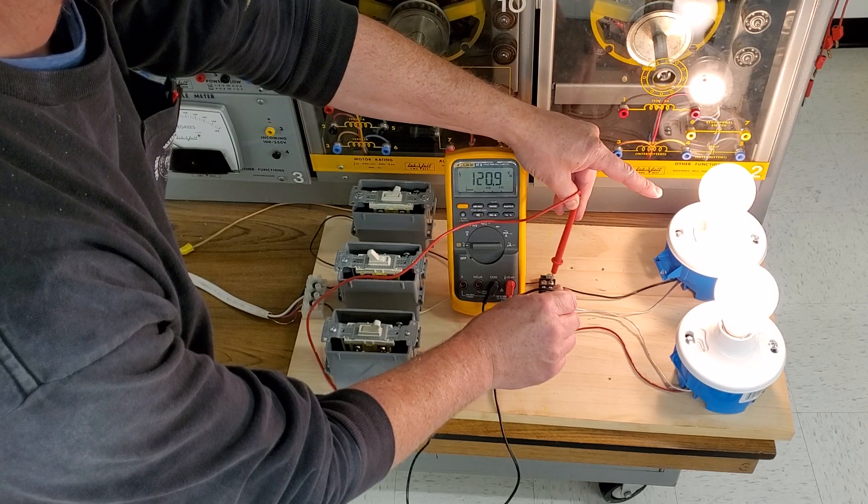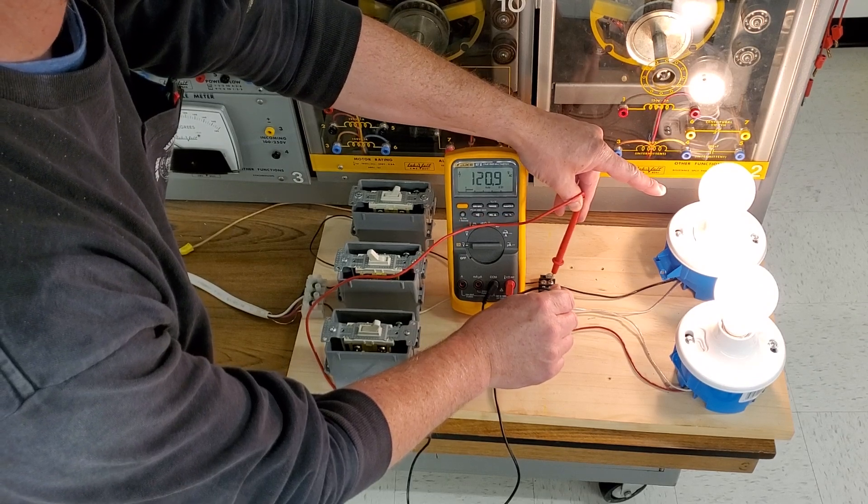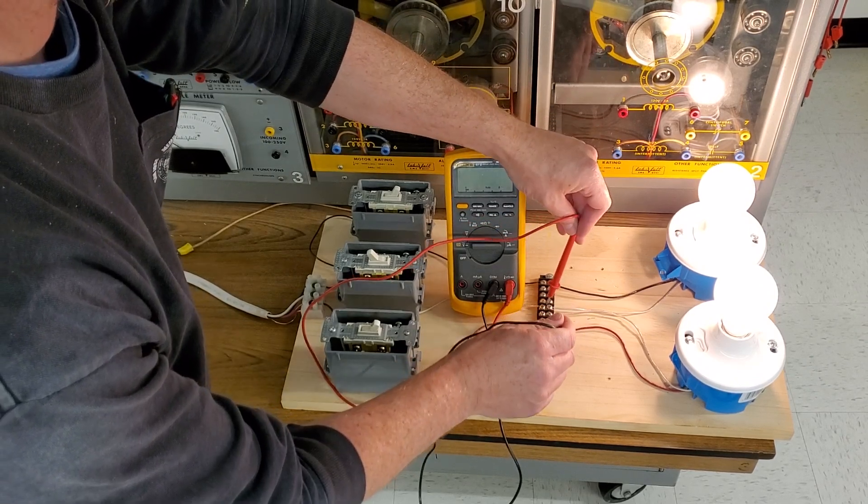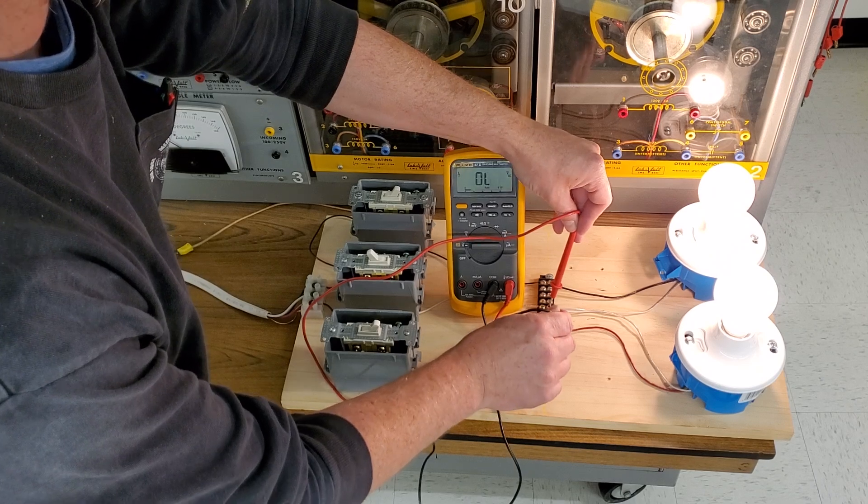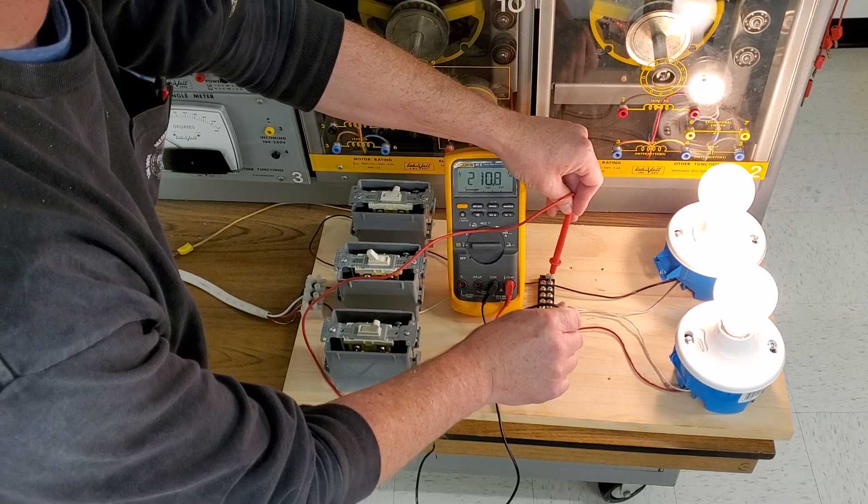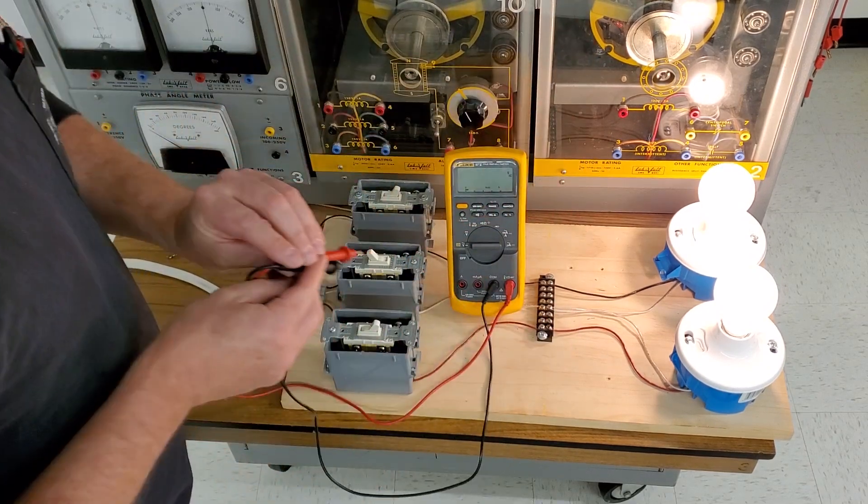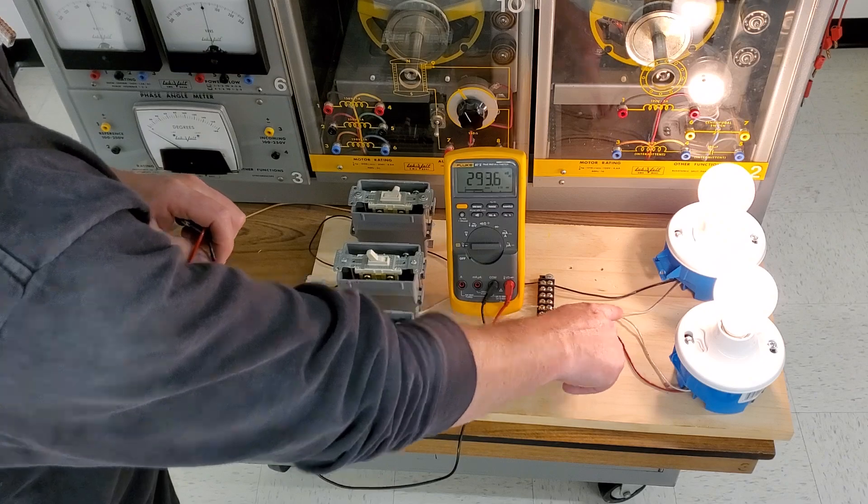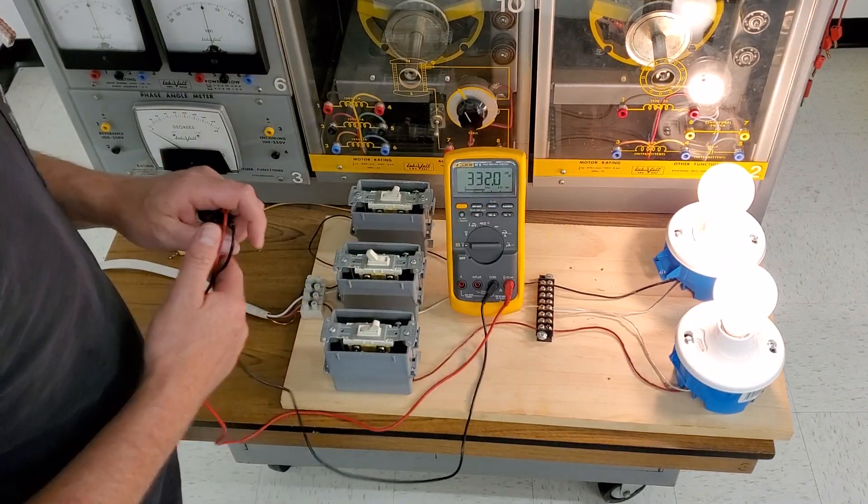And with this bulb here we're only reading 90 volts, and that totals up to 210. Once we lose our neutral and we're in series through our bulbs, if these were of more different resistances, we could cause one of these sensitive electronic devices to blow up.